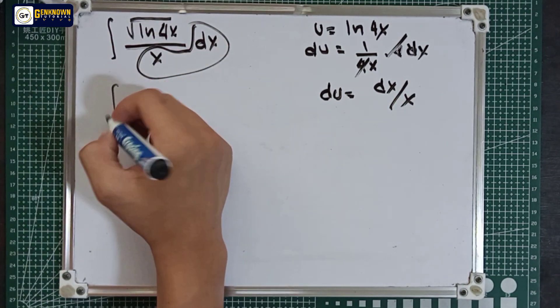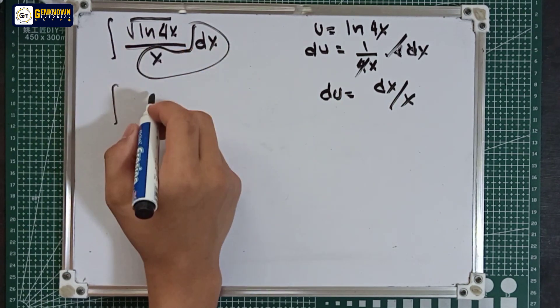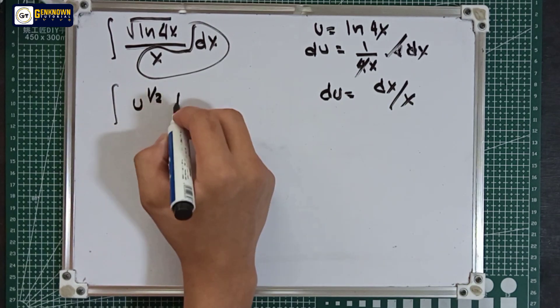Let's substitute. The integral of ln 4x raised to 1 over 2 becomes u raised to 1 over 2 du.